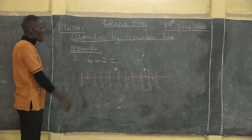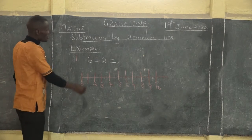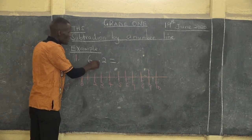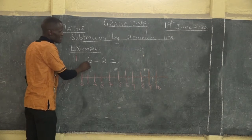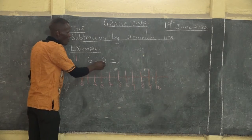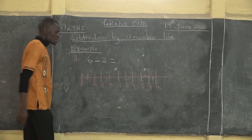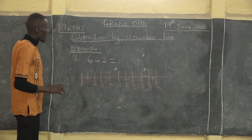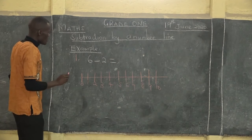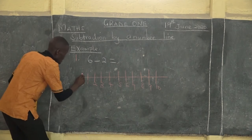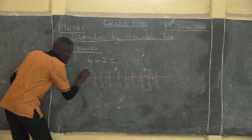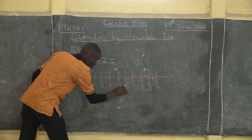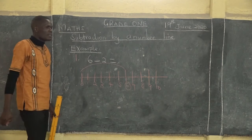So we have our first example, which is six take away two. Starting from our zero, where is our number six? Our number six is here, so we can circle it on our number line.